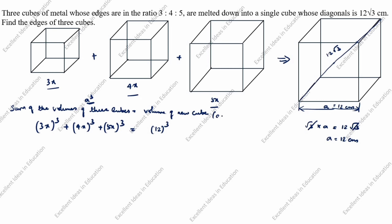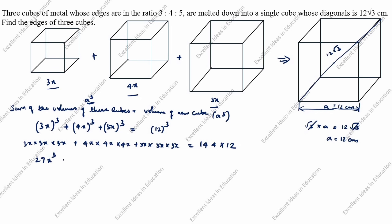The volume of a cube is a cubed, and a equals 12, so 12 cubed. Expanding: 3x into 3x into 3x plus 4x into 4x into 4x plus 5x into 5x into 5x equals 144 into 12. That gives us 27x cubed plus 64x cubed plus 125x cubed equals 144 into 12.